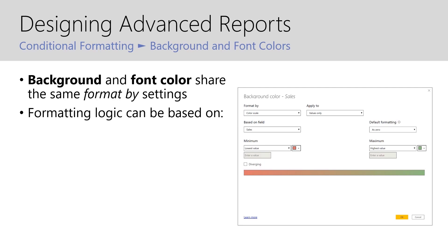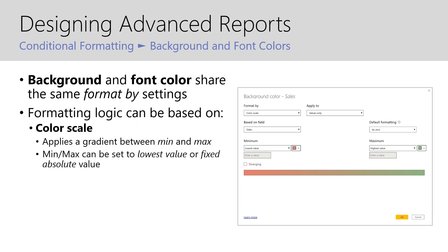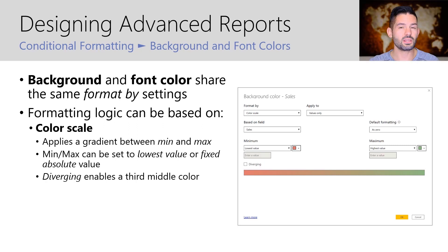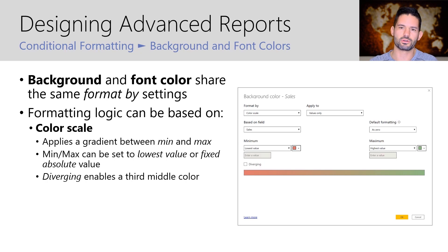The formatting logic itself can be based on a few different things. First, color scale, which will apply a gradient between the min and the max, creating a range. The min and max can be set to the lowest value or a fixed absolute value. You also have the option to add a diverging color, which would enable a third middle color. Though typically, I find that three colors can start to become a bit noisy, so I normally only use two colors in the range and don't often implement the diverging color.